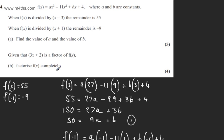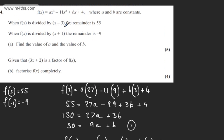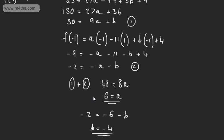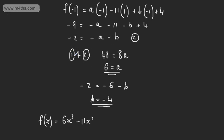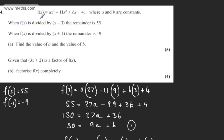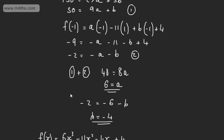It says given that 3x plus 2 is a factor of f of x, in part B for 4 marks we're asked to factorise f of x completely. Substituting in our values, f of x is equal to 6x cubed minus 11x squared minus 4x plus 4. Using the values found in part A, we can write f of x equals 6x cubed minus 11x squared minus 4x plus 4.